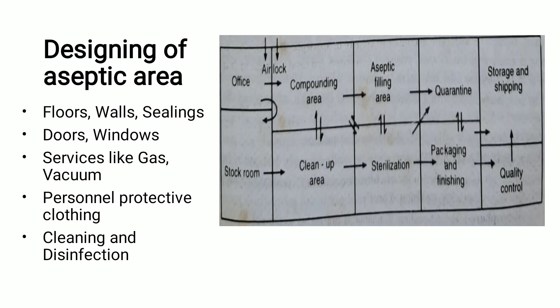Aseptic areas — also called clean rooms — are specially designed areas for controlling microorganisms. The key aspects to control in designing such an area include: floors, walls, and ceilings; doors and windows; services such as gas and vacuum; personal protective clothing; and cleaning and disinfection procedures.